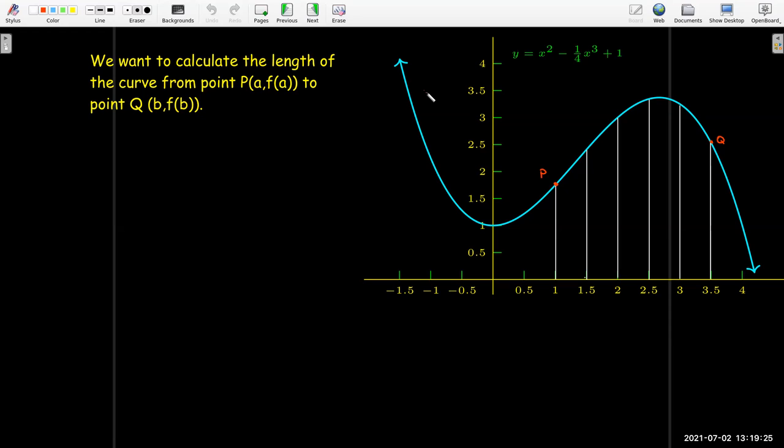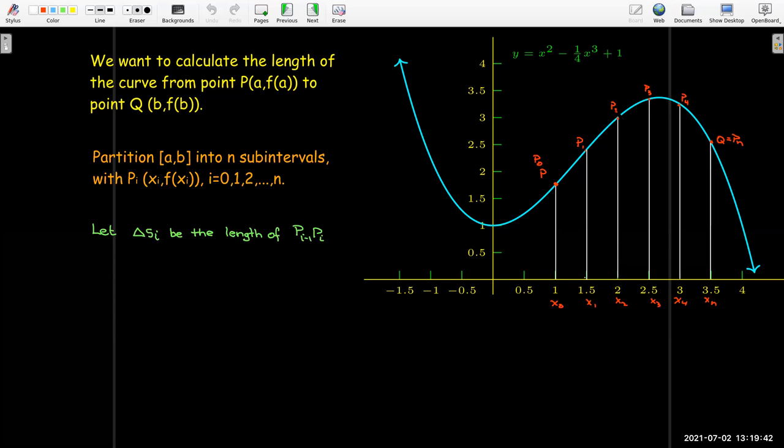So suppose I have a curve and I'm trying to calculate the length of the curve from point P on the curve over to point Q on the curve. So what do I normally do? I'm going to break up that curve into several smaller curves to get an approximation of the length.